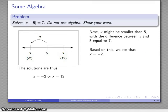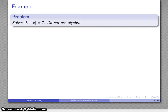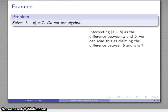Well, let's take a look at a different problem. 5 minus X, absolute value, equal to 7. And again, same sort of problem. So again, I want to interpret the absolute value of a minus b as the difference between a and b. And so I can read this as claiming the difference between the two is 7. And again, I'll use the number line to model the situation.